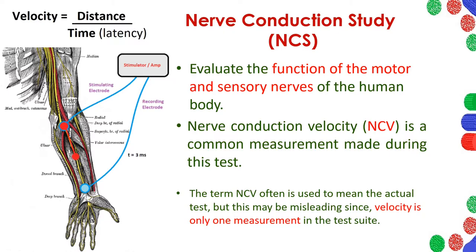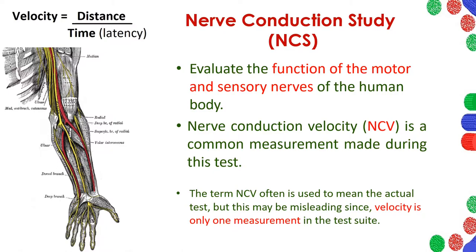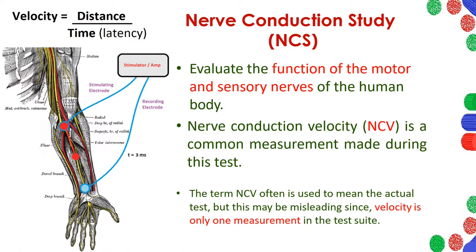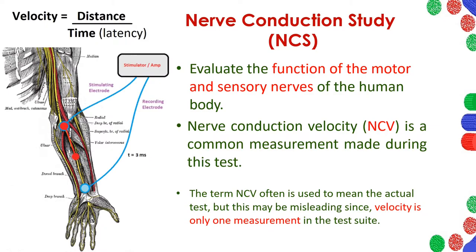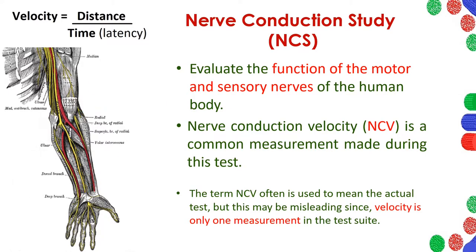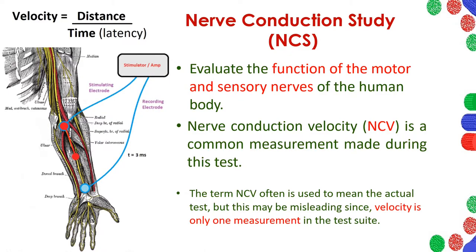Nerve conduction study is a battery of investigations to evaluate the function of motor and sensory nerves in the human body. Usually when the physician prescribes this kind of investigation, they write NCV, which represents nerve conduction velocity. But you have to keep in mind that nerve conduction velocity is just one of the tests in a series of investigations found in the nerve conduction study. Nerve conduction study is a large set containing a number of laboratory investigations, of which NCV is the most important one.